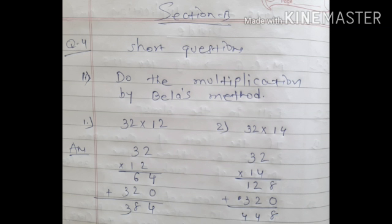If it just says to do multiplication, you can do any method. Some people have the habit of putting zero in the first step and then starting from the right side. But here we will do multiplication using Bela's method. During the chapter, we did all this.